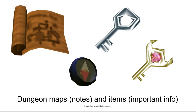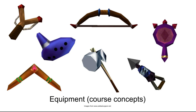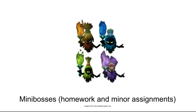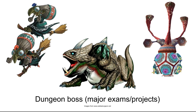Sometimes you get really special keys, and that way you know you really have to hang on to this key — it's super important and it has a particular use. You will also get some equipment, and these are your course concepts. Just like equipment, they all do different things — you wouldn't use the bow for what the hammer does. You have to use your equipment to fight monsters in the dungeon. For low-stakes assignments like homework, those are your mini-bosses. For major exams and projects — stuff that really counts towards your grade — those are your dungeon bosses.